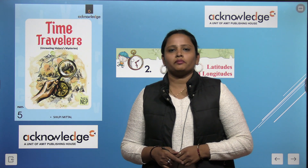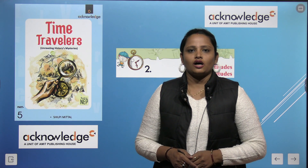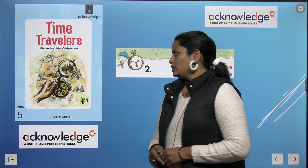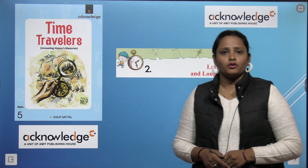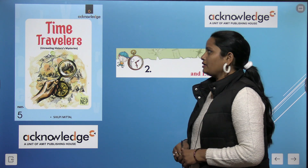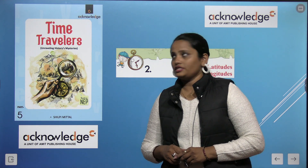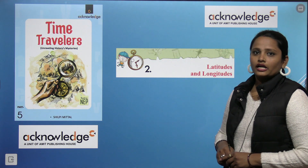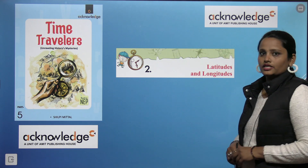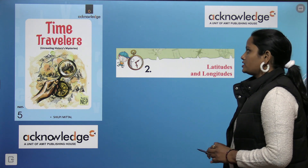Hello dear children, welcome back to the Acknowledge series by Amit Publishing House. I am Vandana and we are doing book 5. This is your assisted book and the name of your book is Trying Travelers Unraveling Mysteries. Today we are back again with chapter number 2, and the name of the chapter is Latitudes and Longitudes. So let's start with the chapter.